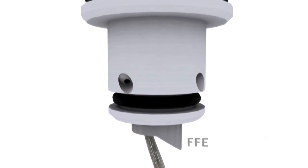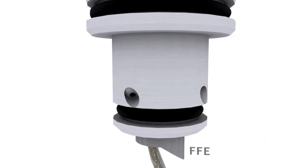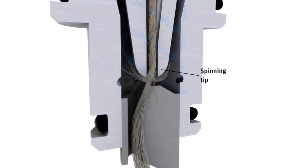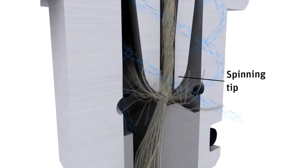The FFE shape is designed in a way to keep the fibers controlled in the parallel position for entering into the spinning tip.